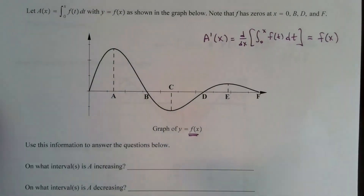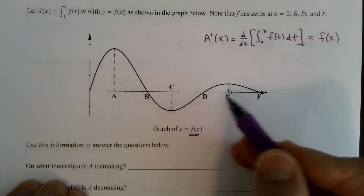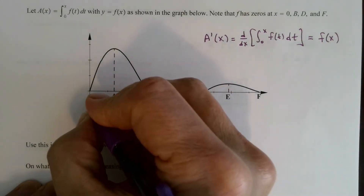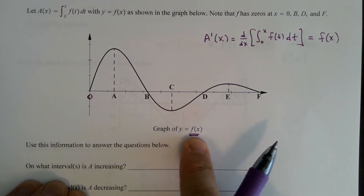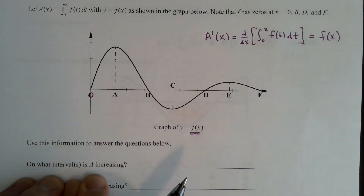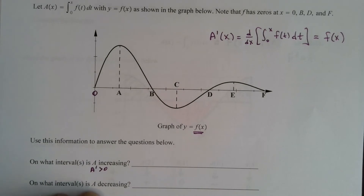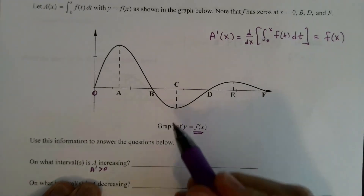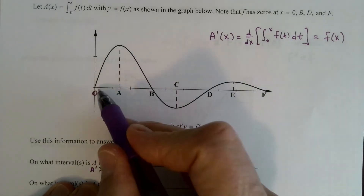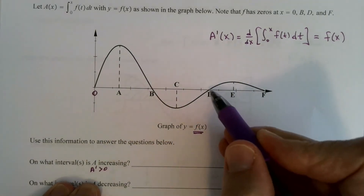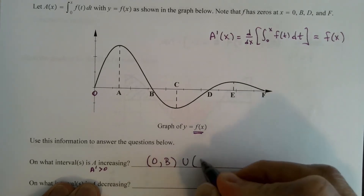Where is A increasing? A is increasing when A prime is positive — that is, when f is above the x-axis. That happens from zero to B, and then again from D to F. So A is increasing on the intervals zero to B and D to F.